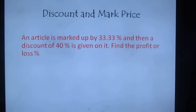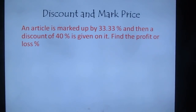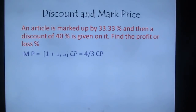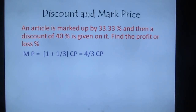Second question: an article is marked up by 33.33% and a discount of 40% is given. Find the profit or loss percentage. Marked price = (1 + 1/3) × CP = 4/3 × CP, since 33.33% = 1/3.